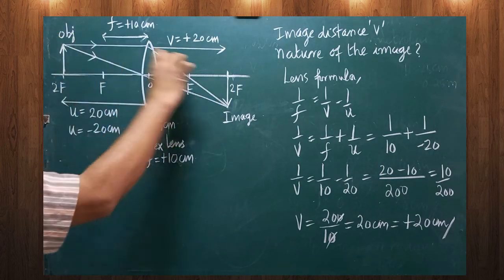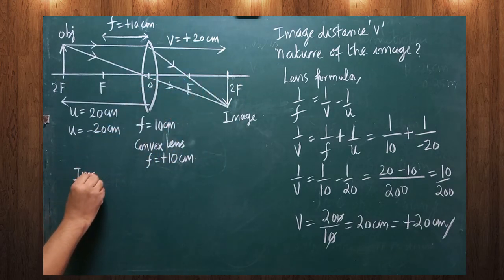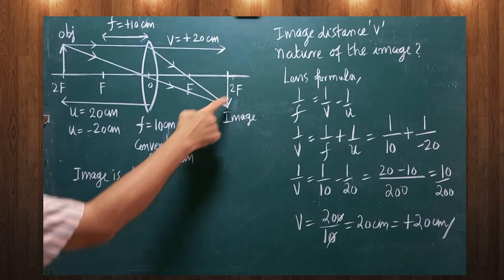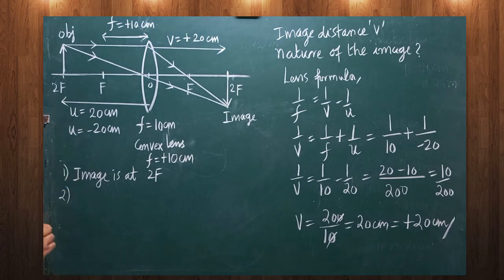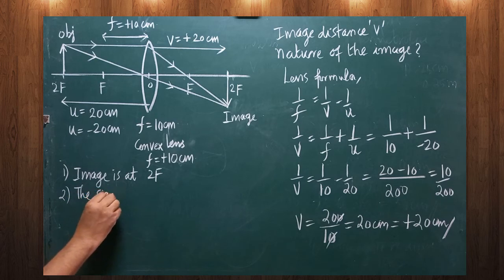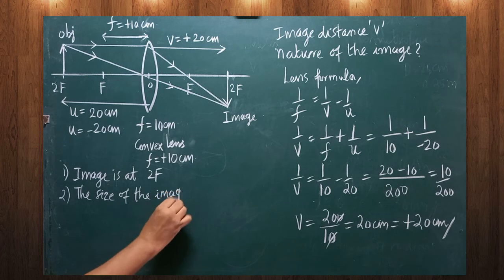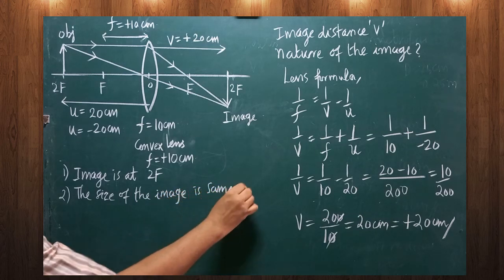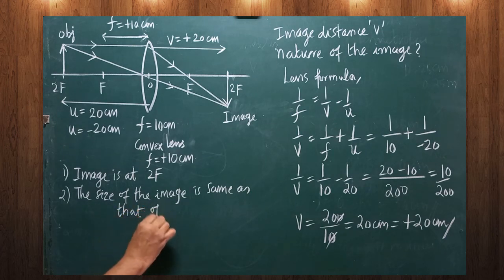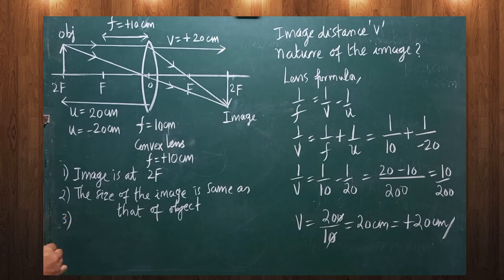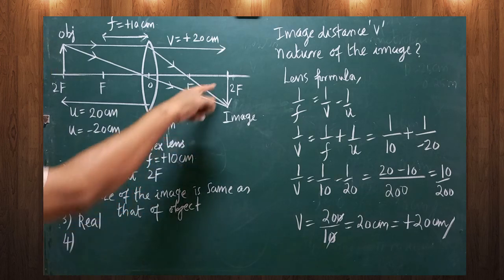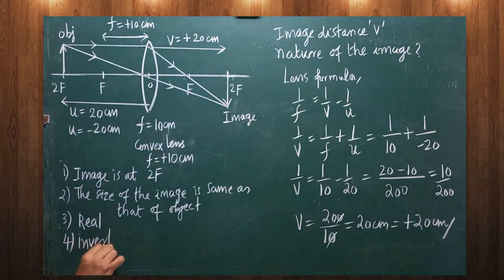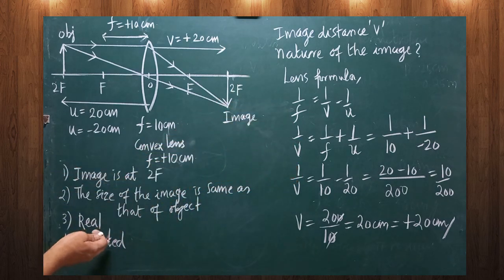Now we describe the nature of the image. First, the image is caught at 2f. Second, the size of the image is the same as that of the object. Third, it can be caught on a screen, therefore it is a real image. Fourth, the object is erect but the image obtained is inverted, so the image is inverted in nature. These are all the descriptions of the image.